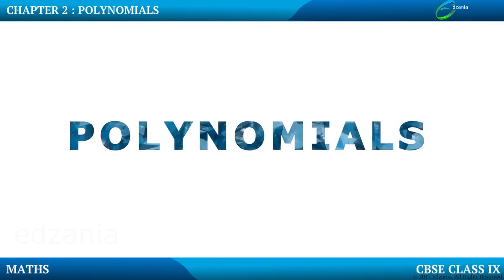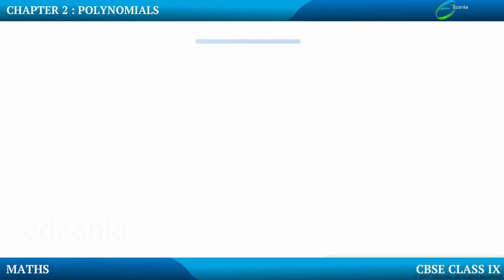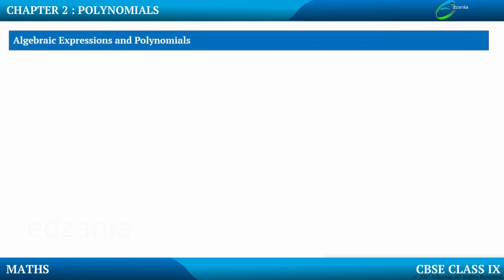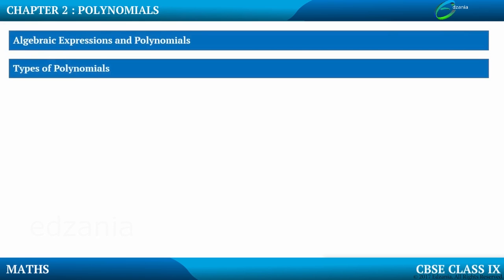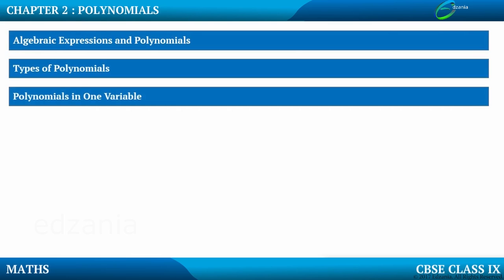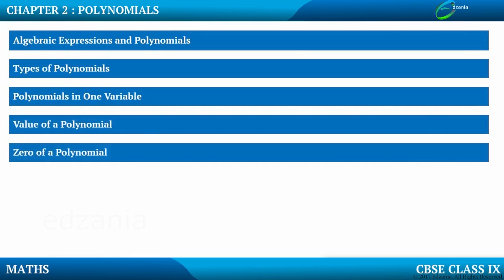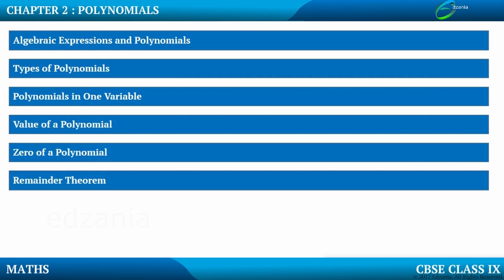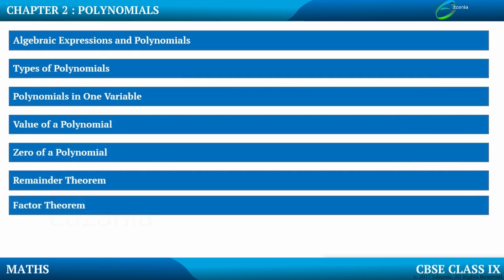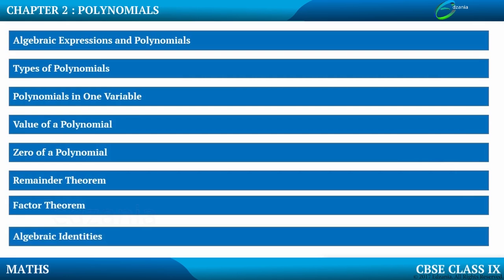Polynomials. Let us try to understand what are the topics we are going to cover in this chapter. The first topic is Algebraic Expressions and Polynomials, then Types of Polynomials, Polynomials in one variable, value of a polynomial, zero of a polynomial, remainder theorem, factor theorem, and Algebraic Identities. Let us move on to the first topic, that is Algebraic Expressions.